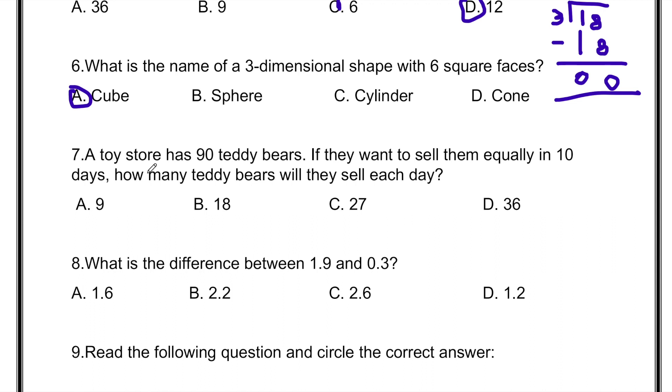A toy store has 90 teddy bears. If they want to sell them equally in 10 days, how many teddy bears will they sell each day? If there were 100 teddy bears, then they would sell 10 each day. But there are 90 teddy bears. That means we have to divide 90 by 10. So dividing 90 by 10 will equal 9, meaning 9 is the answer.